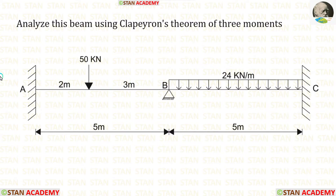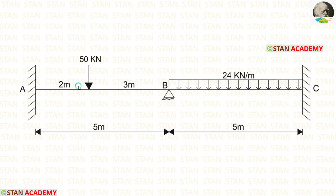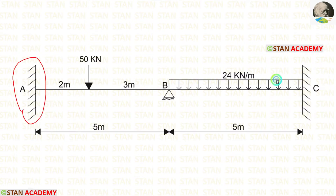Before analyzing, let us see the beam. In this beam there are two spans: span AB and span BC. In span AB there is a point load of 50 kilo Newton acting at two meters from point A. In span BC there is a uniformly distributed load of 24 kilo Newton per meter acting for the full span. At points A and C we have fixed supports, and at point B there is a hinged support.